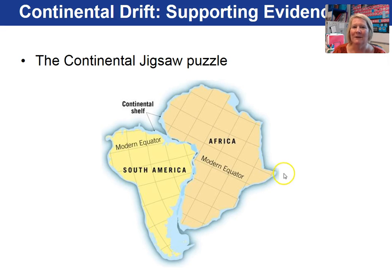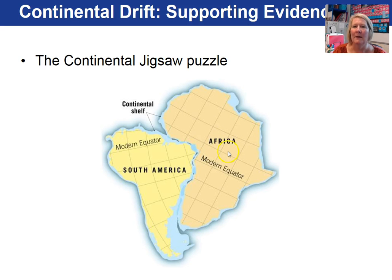So what evidence was there for continental drift? What convinced Wegener that these lithospheric plates were moving around? One of the big lines of evidence came from the apparent fit of continents like pieces of a puzzle. Here we're showing South America and Africa — if you close up the Atlantic Ocean, you end up with quite a nice fit of the two continents.